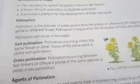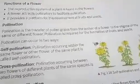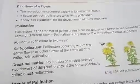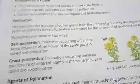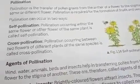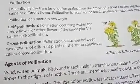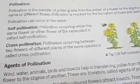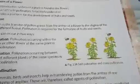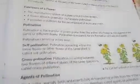Welcome back children, this is the second video for standard 6 biology. Now we will start with pollination. What is pollination? It is the transfer of pollen grains from the anther of a flower to the stigma of the same or different flower.